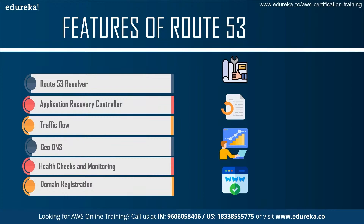Next is the Application Recovery Controller, which ensures that availability zones or regions are continuously audited for recovery readiness. The third feature is Traffic Flow, an easy-to-use, cost-effective global traffic management system that routes end users to the best endpoint for your application based on geo-proximity, latency, health, and other factors. Then there is Geo DNS, which routes end users to a particular endpoint you specify based on their geographical location.